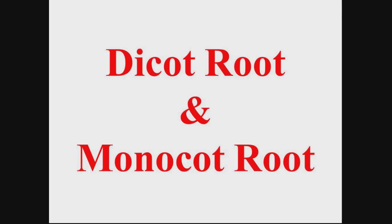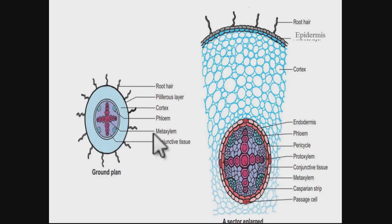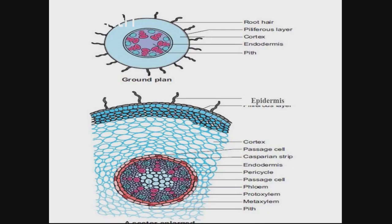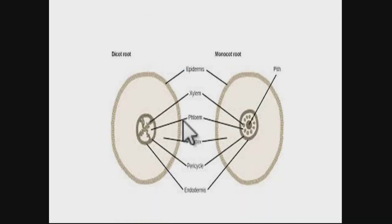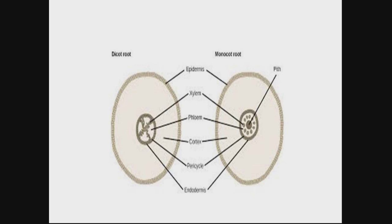In this lecture we are going to talk about dicot root and monocot root. We have already done with the dicot stem and monocot stem. This is the first diagram showing the transverse section of dicot root, and this is the second diagram showing the transverse section of monocot root. At the end, we will differentiate dicot root and monocot root.